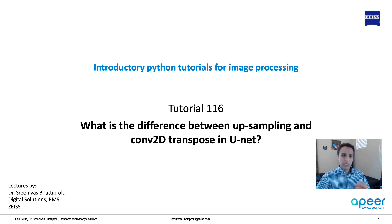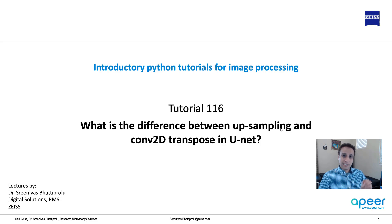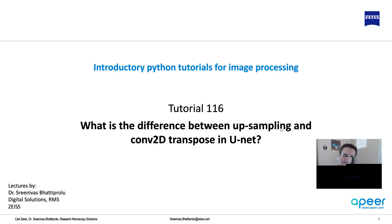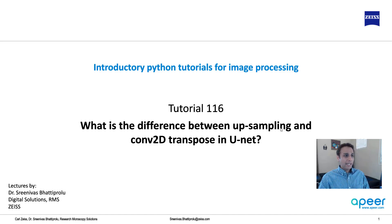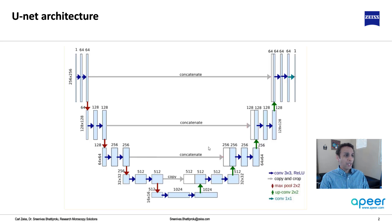While doing that, how do you upsample your image — going from a smaller size to a larger size? There are two primary options. One is upsampling: as the name suggests, you're taking the pixel values and extending them in a way. You can also perform transpose convolution operations. Let's see what the difference is between these two.